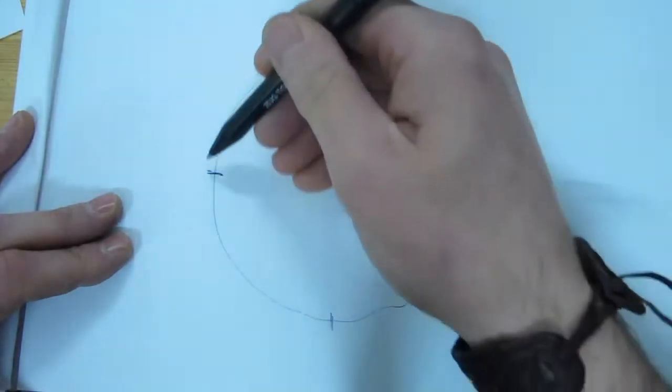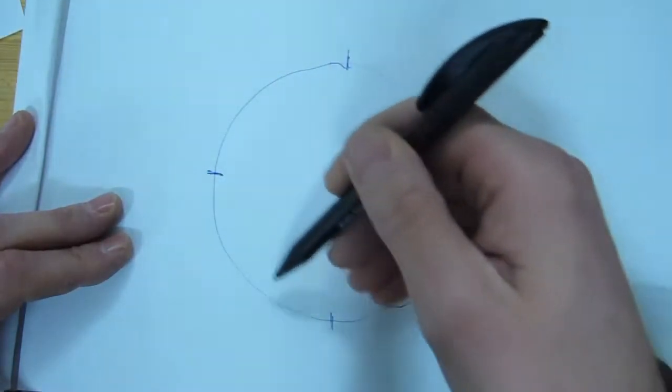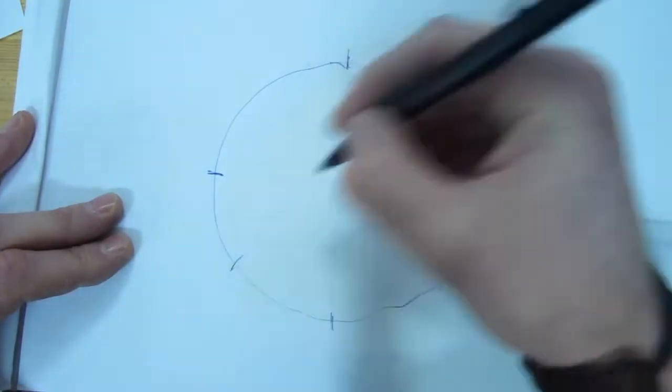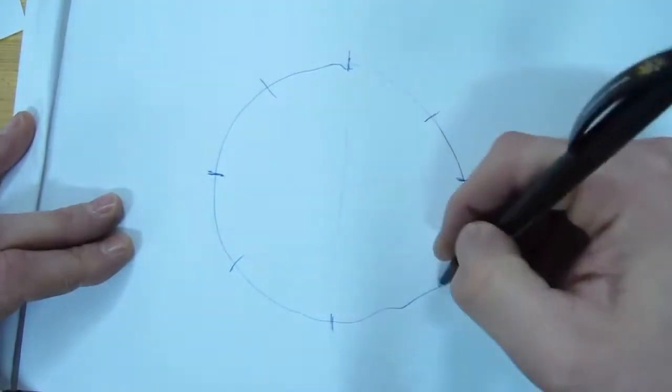One, two, three, four, one, two, three, four. If we divide that circle yet again, we get eight markers.